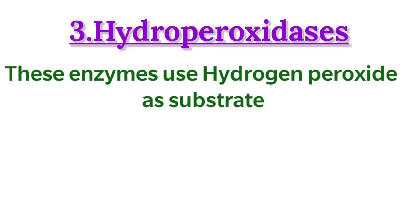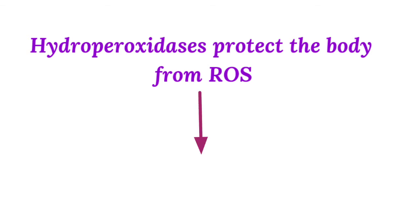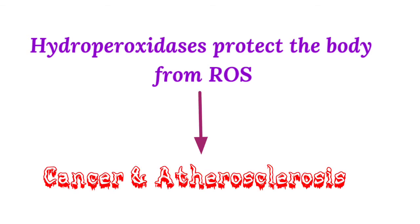Coming to the third group of oxidoreductases, that is hydroperoxidases. These enzymes use hydrogen peroxide as a substrate and are classified into two types: peroxidases and catalase. The important function of hydroperoxidases is that they protect the body from ROS — reactive oxygen species — which are harmful agents. Accumulation of ROS can lead to diseases like cancer and atherosclerosis, so these hydroperoxidases are required to prevent such risks.